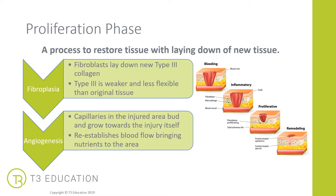The second stage in the proliferation phase is angiogenesis — creating new blood cells and new blood vessels. The capillaries around the injured site start to bud and grow towards the actual injury itself, re-establishing blood flow to the area and bringing important nutrients to that injury site. One of those important nutrients is oxygen, which we need to help with the healing process. So if someone is a poor wound healer, has a poor diet, or for example is a smoker, then this process will be restricted.